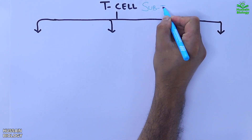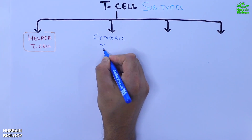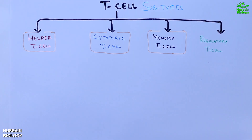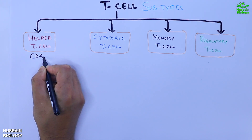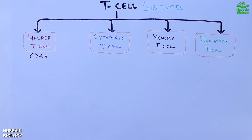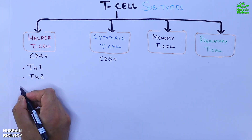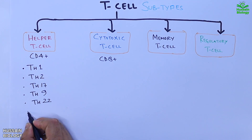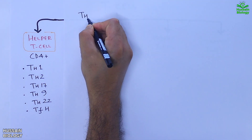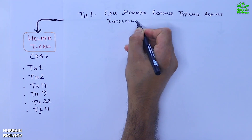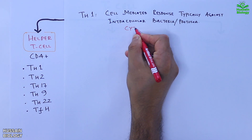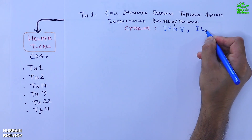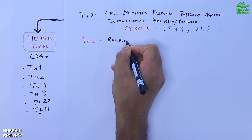T cell subtypes include helper T cell, cytotoxic T cell, memory T cell, and regulatory T cell. The helper T cell is also known as CD4-positive T cell, and the cytotoxic T cell as CD8-positive T cell. The CD4-positive helper T cell has subsets: Th1, Th2, Th17, Th9, Th22, and Tfh. Th1 is involved in cell-mediated response against intracellular bacteria or protozoa, secreting cytokines like IFN-gamma and IL-2. Th2 responds against extracellular pathogens, secreting IL-4, IL-5, and IL-13.